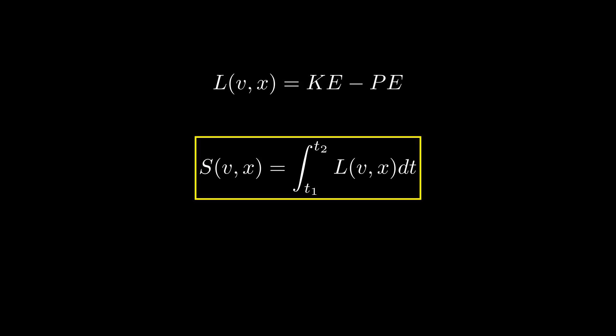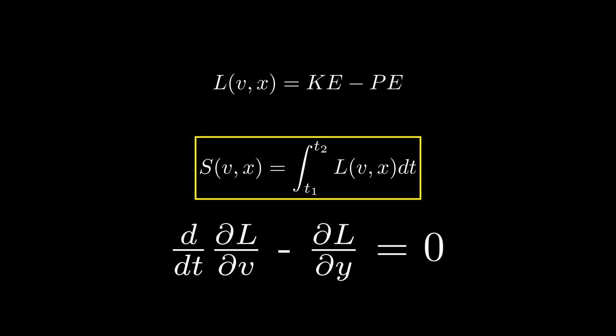The principle of least action states that the object will take the path where the action S is minimized. I am not going to prove this idea in the video, but the action S is minimized when the following differential equation is satisfied. This is called the Euler-Lagrange equation.